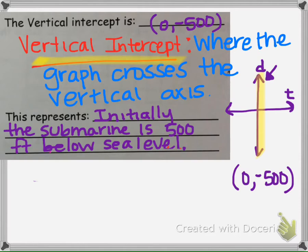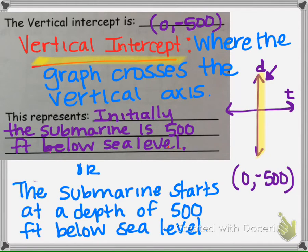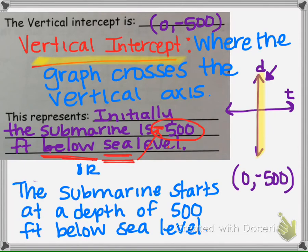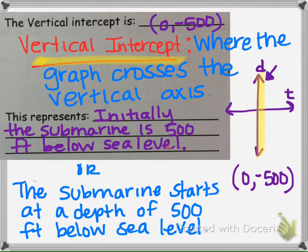What makes more sense is to say: initially, the submarine is 500 feet below sea level. Or: the submarine starts at a depth of 500 feet below sea level before any time had started. What would be incorrect is saying negative 500 feet below sea level — because 'below sea level' already implies negative. So don't say negative 500 feet below sea level; instead explain what the negative represents: that it is below sea level.